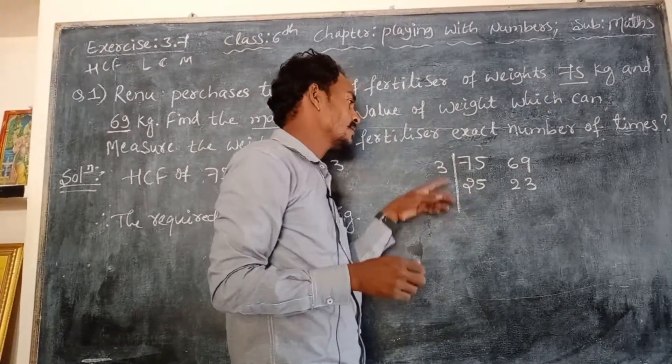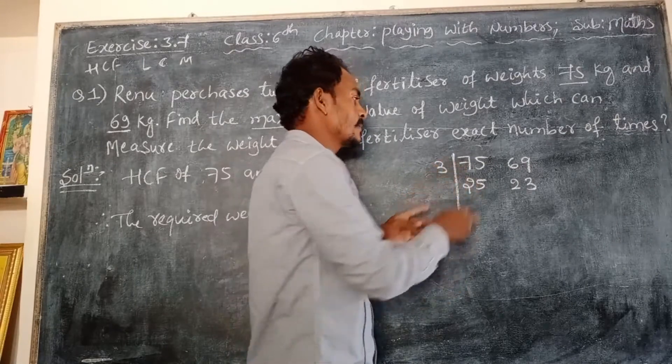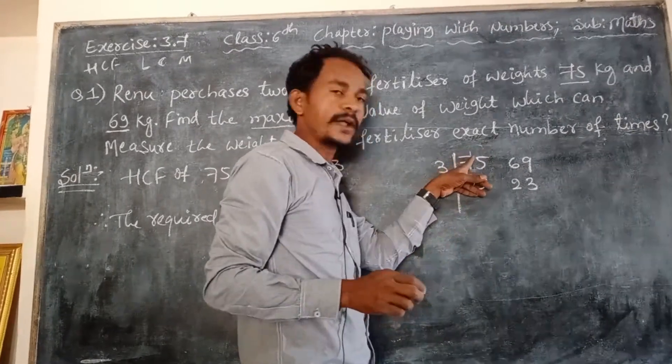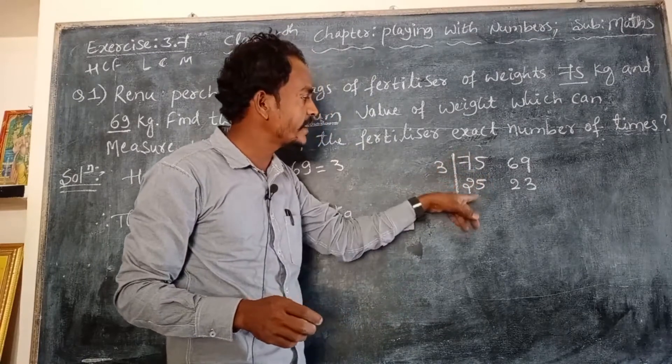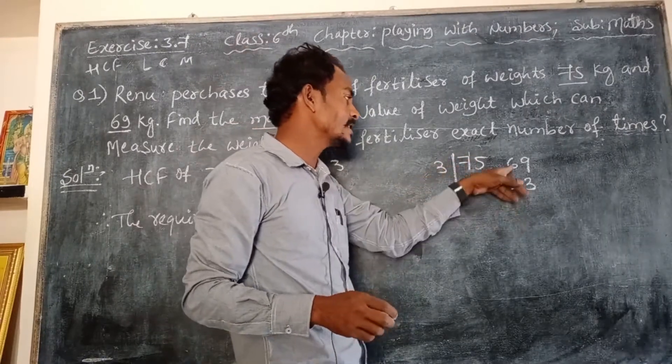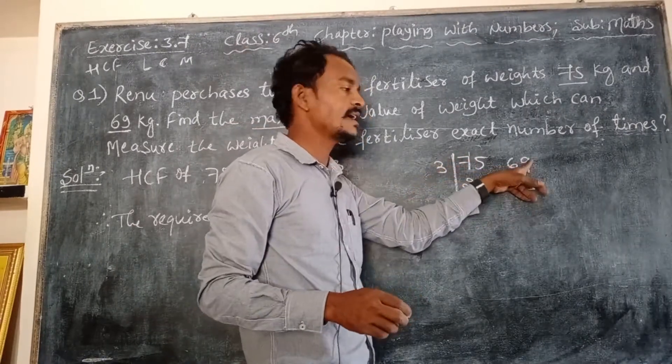So the HCF of 75 and 69. Solve right side. Already I solved: 3 into 6 is 3 into 6, remaining 1. The 15 is there, 3 into 5 is 15. Then 3 into 6, 3 into 3 is 9.